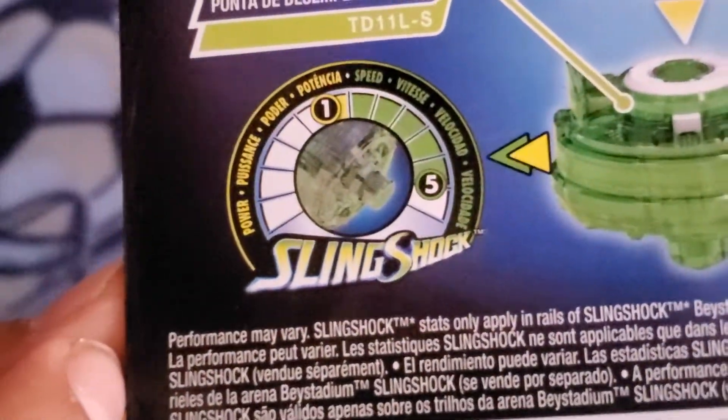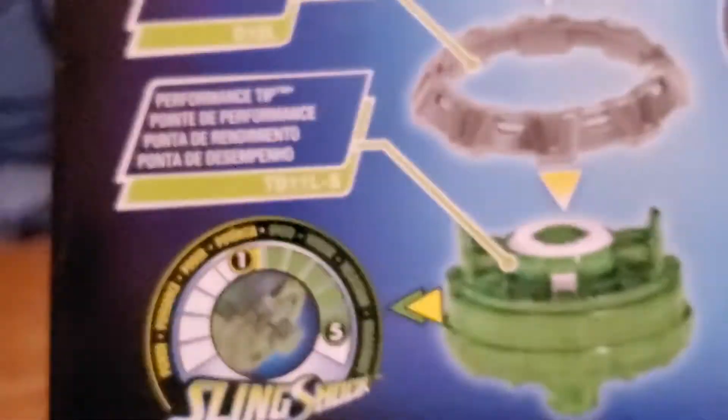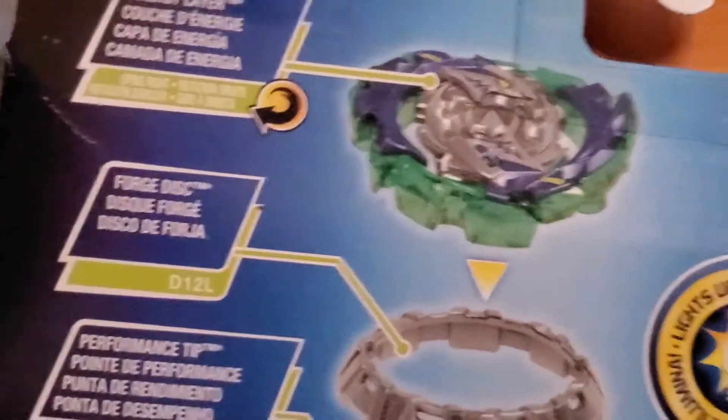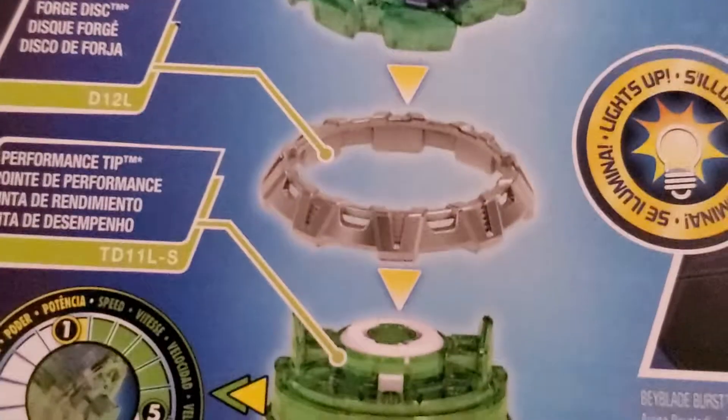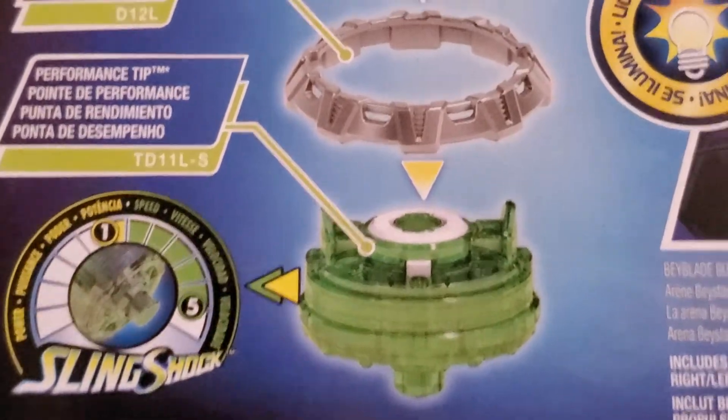And the Sling Shock, you can see right here, how powerful and how its speed is. And you can see how big the performance tip is. And it spins right, you can see it says right there. Spins right at the forge desk and of course the performance tip.